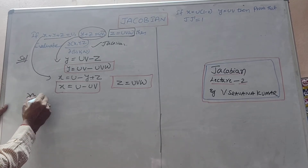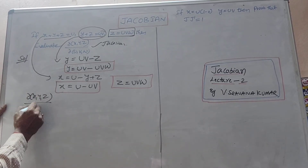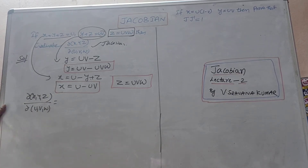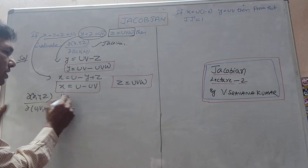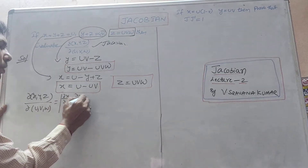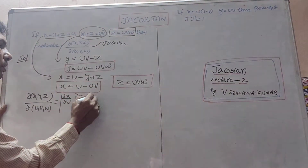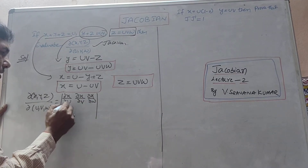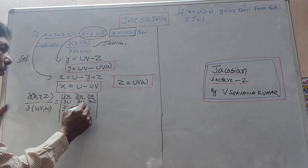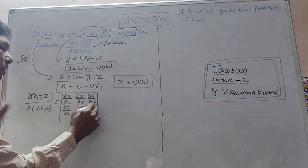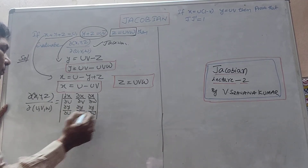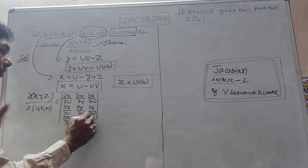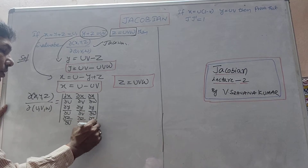The Jacobian formula is the determinant: ∂(x,y,z)/∂(u,v,w) with rows [∂x/∂u, ∂x/∂v, ∂x/∂w], [∂y/∂u, ∂y/∂v, ∂y/∂w], and [∂z/∂u, ∂z/∂v, ∂z/∂w].